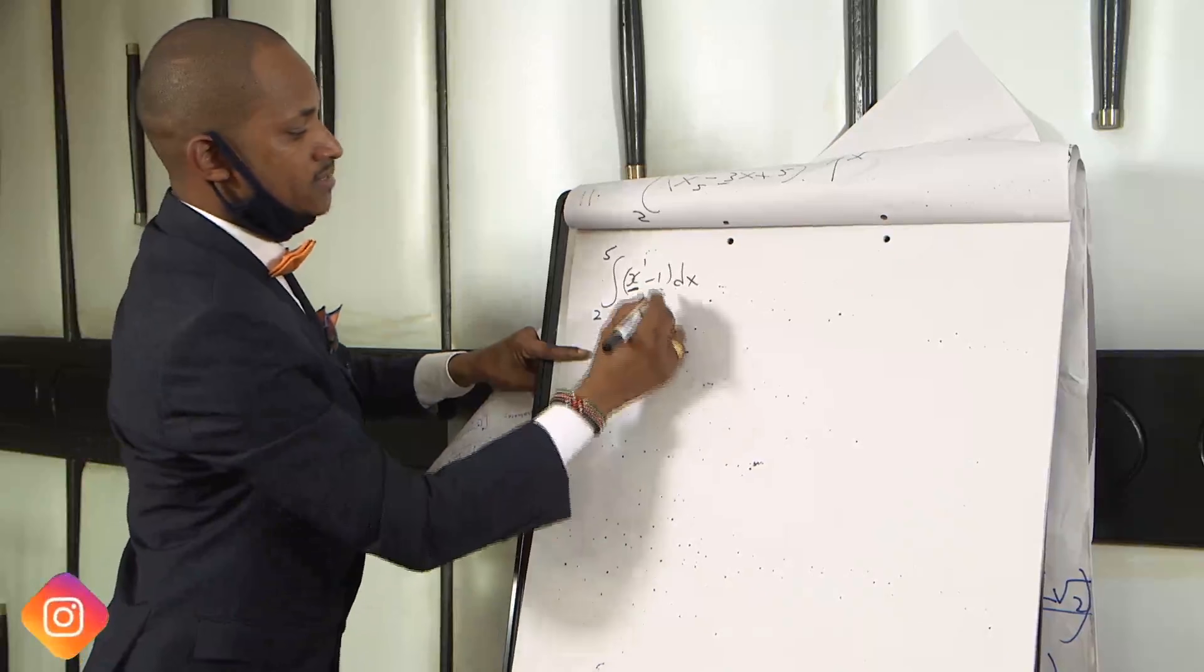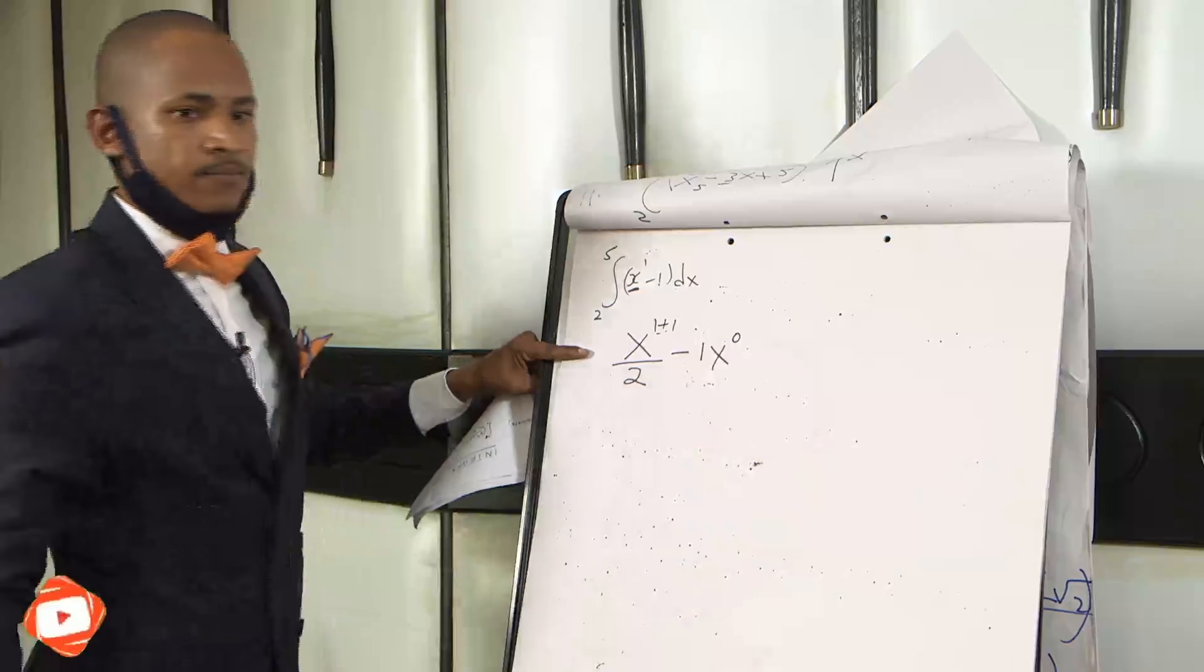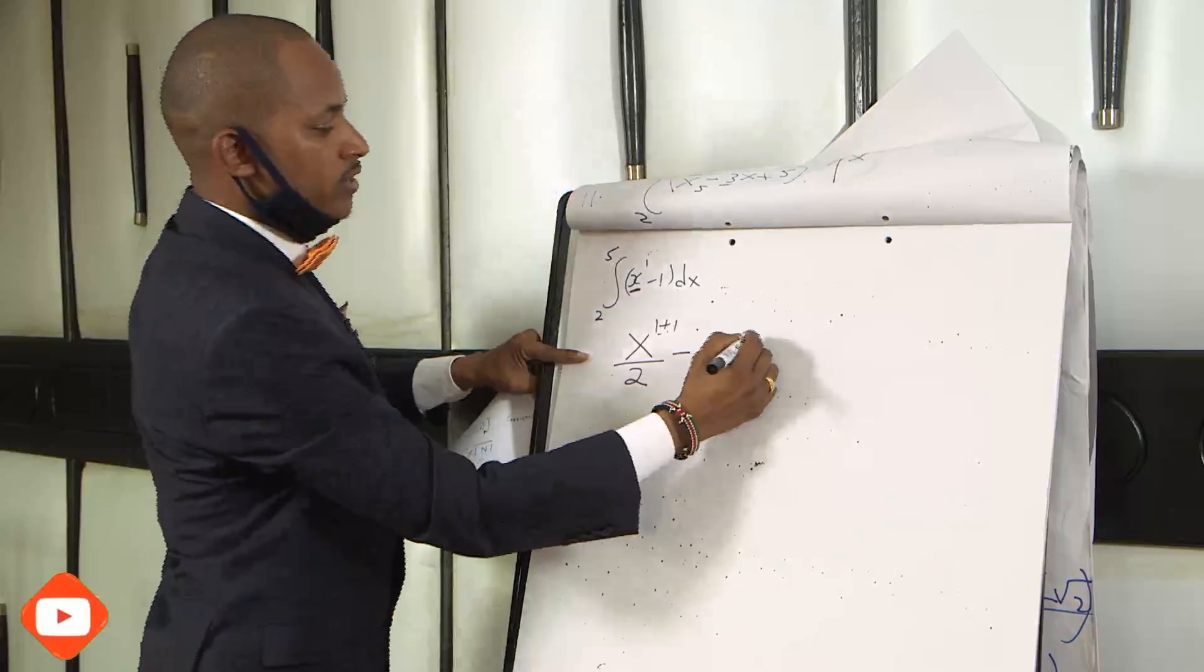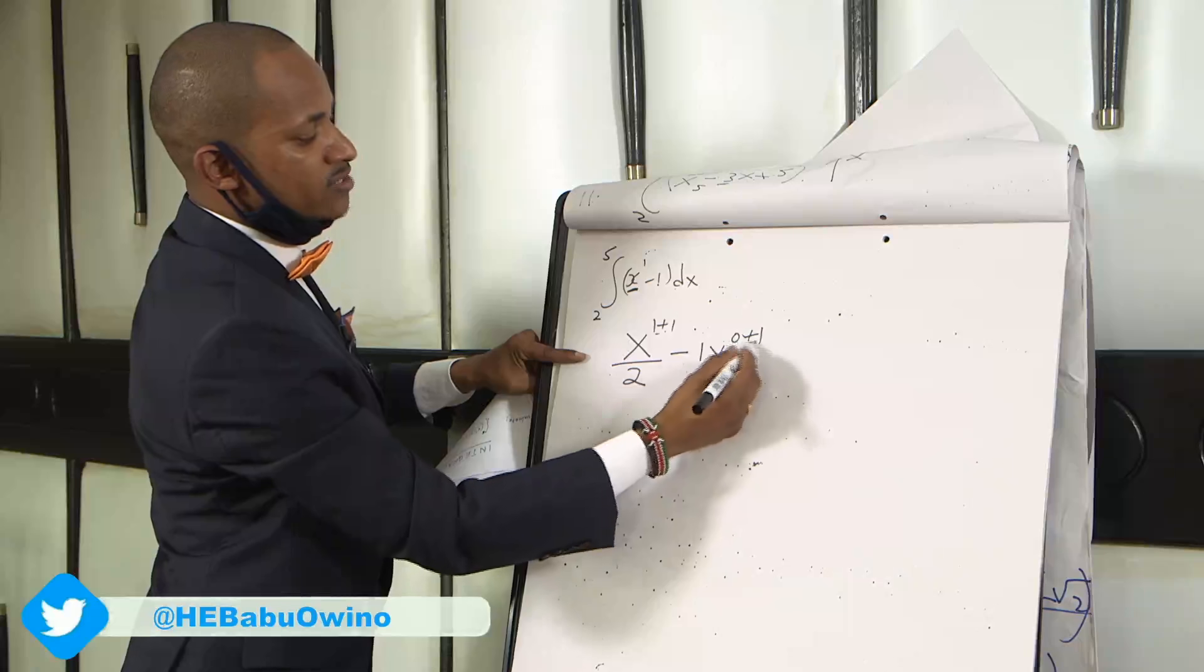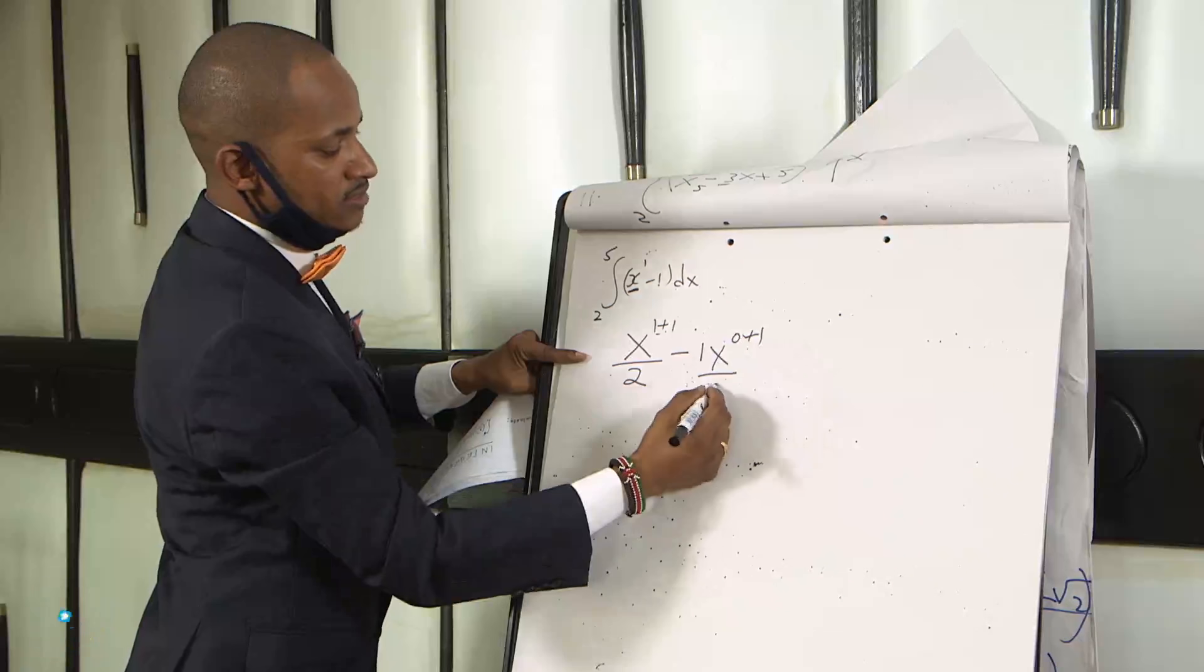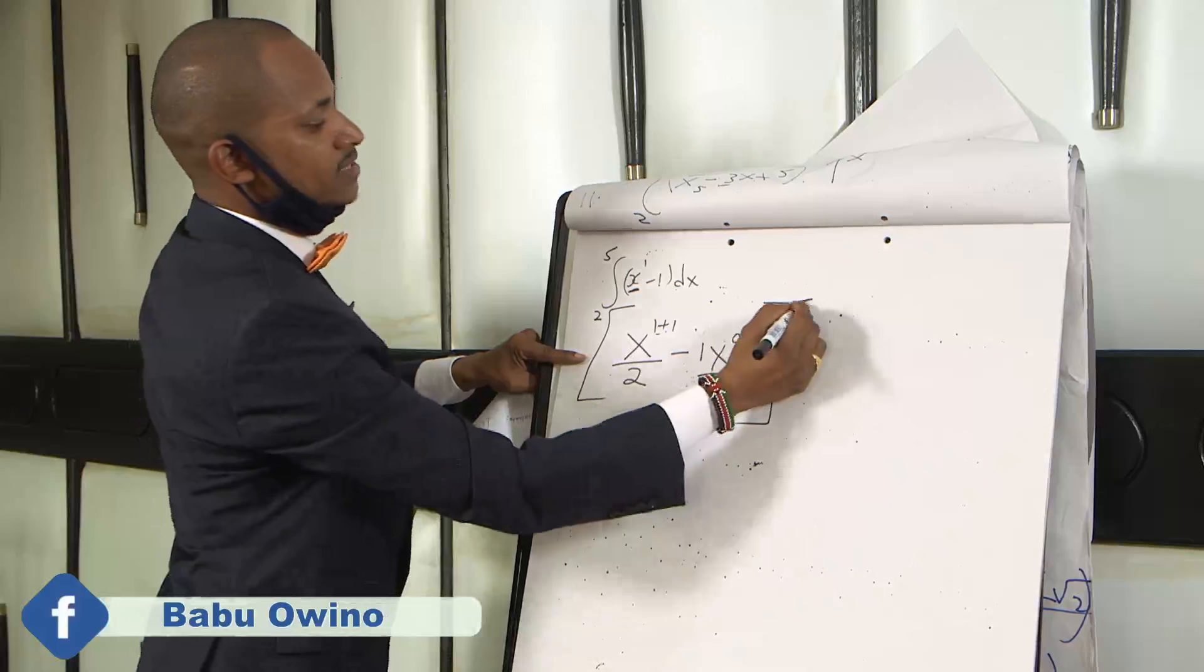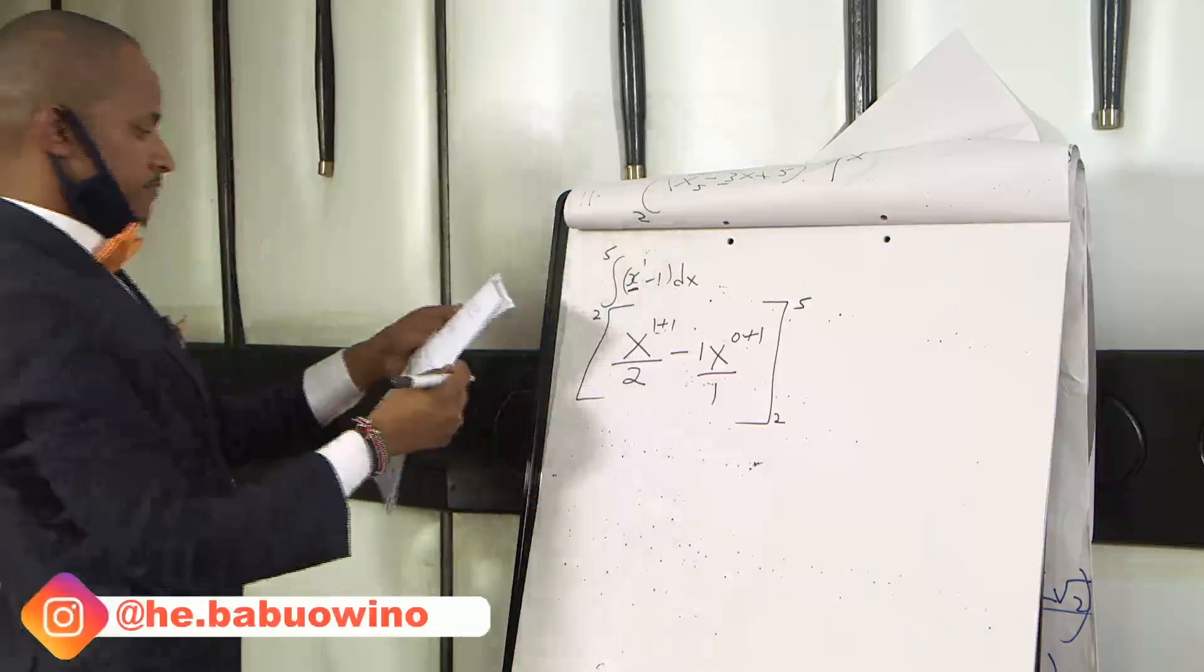Then minus. Remember here we have 1. 1 can also be written as 1 times x raised to power 0. So 1 can be written as x raised to power 0. You add 1, then divide it by that value that you get: 0 plus 1 is 1. And now our limits here are 5 and 2.